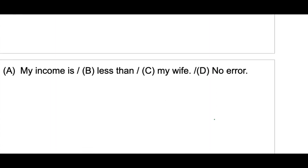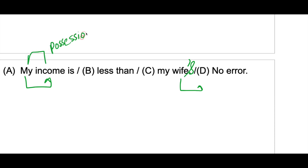Next: 'My income is less than my wife.' Here my income is being compared with my wife's income. The connector is 'than'. Since the first part has a possession — 'my income' — the second part should also show possession: 'than my wife's.' An apostrophe is needed: 'My income is less than my wife's.'